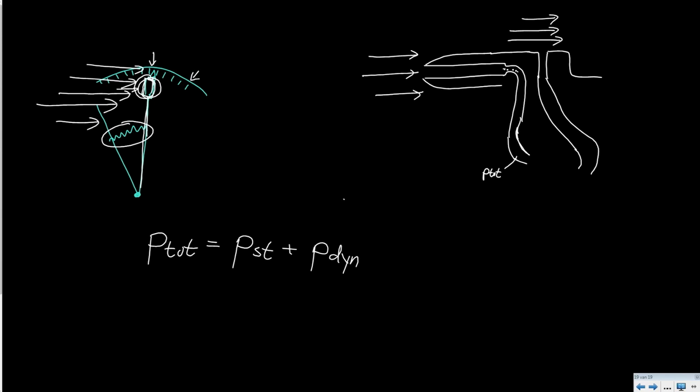And the total pressure consists of the sum of the static pressure plus the dynamic pressure. And for the dynamic pressure sometimes the letter q is used. And the dynamic pressure depends on speed.